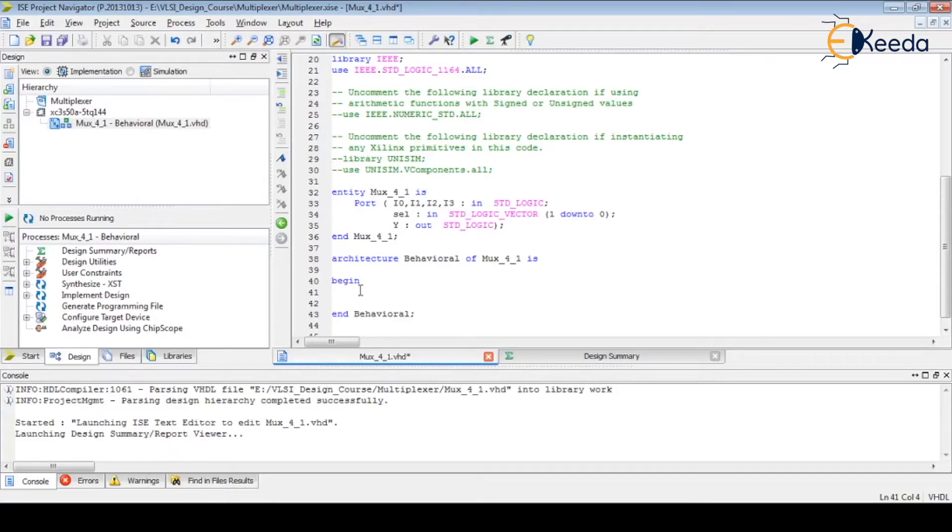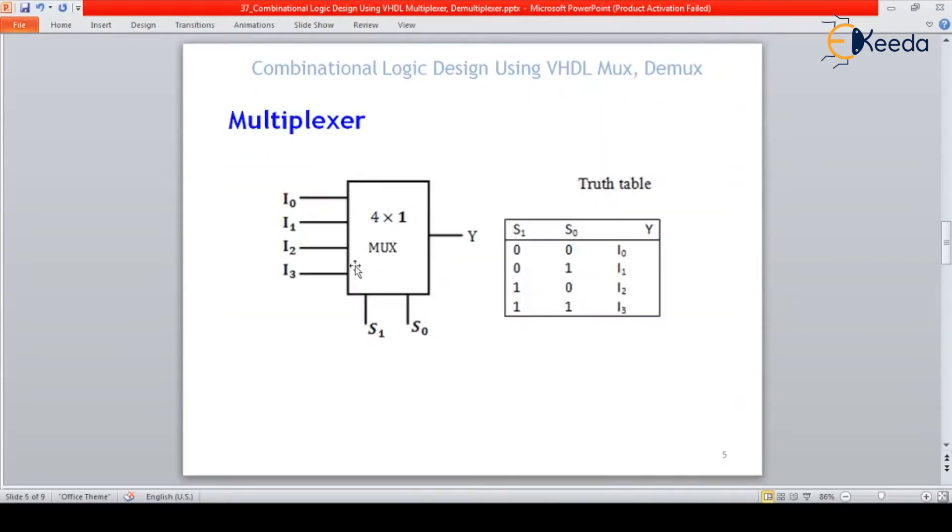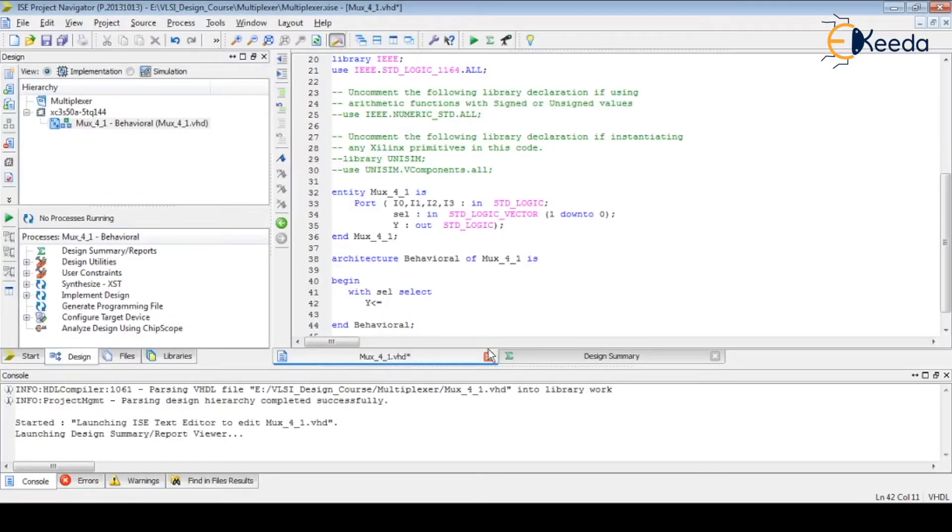Till now whatever the designs we have developed or written in VHDL code is in the when else. So let us start writing a code with the with select concurrent statement. So let us start begin with SEL select. So here our selection is from the SEL signal. This is the expression: with SEL select, then target y. So y has a signal assignment. Y is equal to i0 as per the truth table.